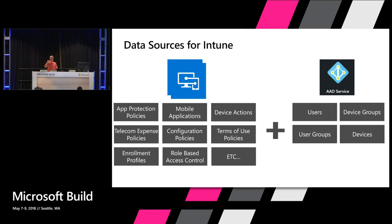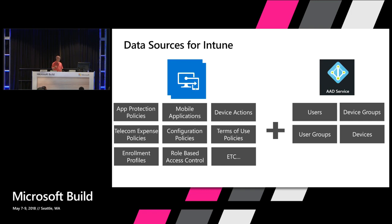Almost all of you are either using or familiar with Intune — great. The types of objects customers commonly need to access include: app protection policies, mobile applications — store apps, line-of-business apps, web links — all accessible via Graph for create, read, update, delete, and assignment operations. Device actions are particularly important for help desk scenarios, including sync, reset, reboot, lock device, and remote assistance sessions.